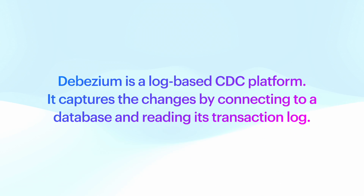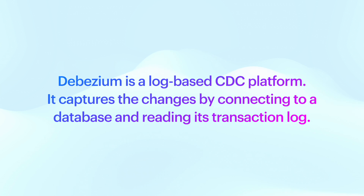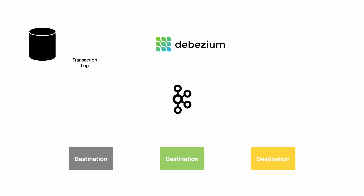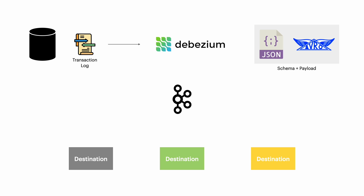Debezium is a log-based CDC platform. It captures the changes by connecting to a database and reading its transaction log. The transaction log is a record of all changes made to the data in the database, including inserts, updates, and deletes. Once the changes are captured from the log, Debezium serializes them as change events formatted in JSON or Apache Avro. These change events have a well-defined schema and a payload which describe the changes applied to the source database.